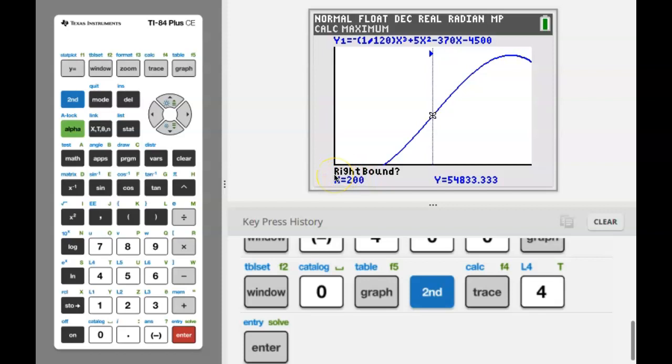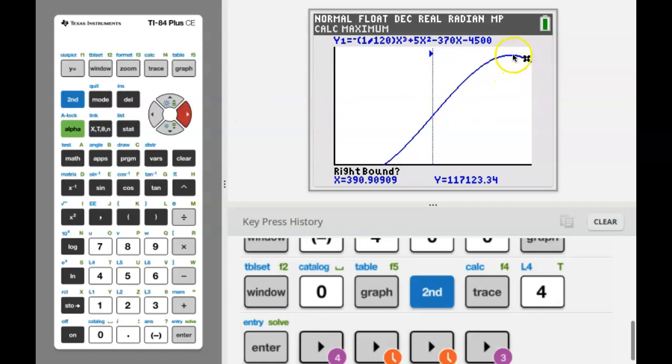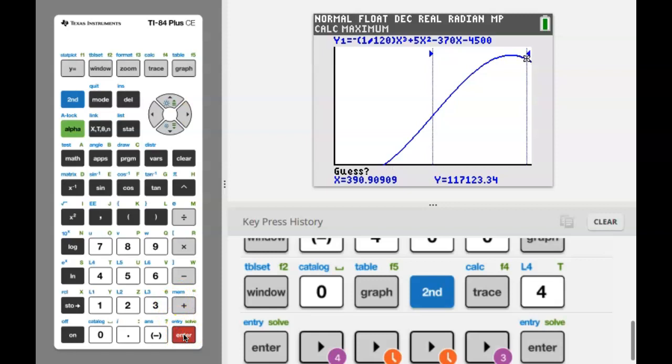Now we're being asked for a right bound. So I'm going to use my right arrow key and I am going to arrow. You can just keep your finger on it if you want to and just arrow that bug or that cursor over so that I am clearly to the right of the maximum that I'm looking to compute. Be sure you're far enough over so that you're definitely to the right and press enter. So now the calculator is going to compute the maximum that is in between these two arrows. So you don't really need to make a guess because there's only one maximum in between the arrows. So just press enter and it's going to calculate the maximum for you.